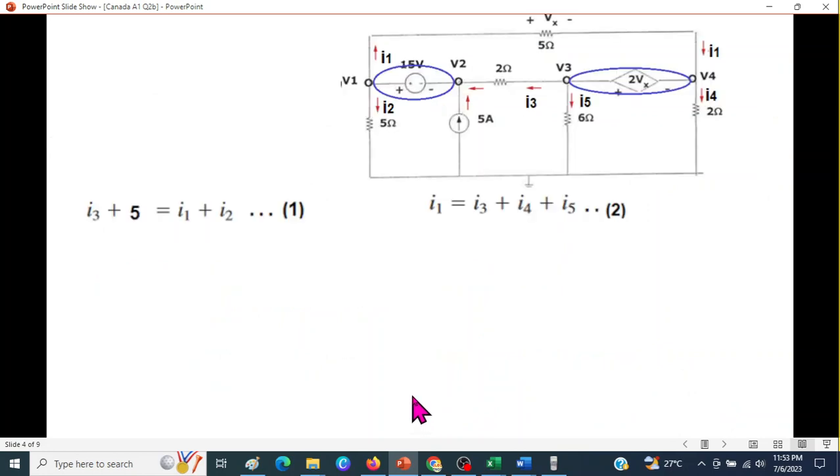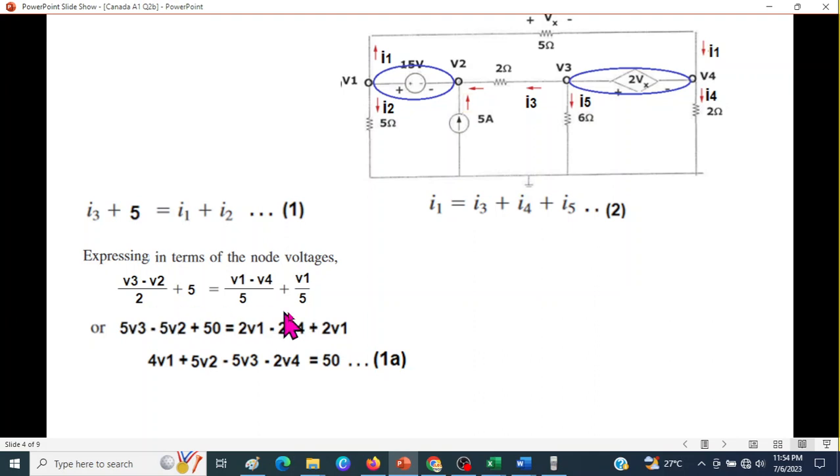Now, since we need to find the voltage, we have to convert the KCL equations into voltage form. And I hope you remember how to write, for example, I3. Now, this is I3, so we can say it as V3 minus V2, from higher to lower, V3 minus V2 divided by 2. So, V3 minus V2 divided by 2, plus this 5, and then plus I1. Now, I1, look, it is going from here to here. So, V1 is higher. So, V1 minus V4 divided by 5. V1 minus V4 divided by 5. And finally, I2. This is I2. I2 is coming from V1 to ground. So, V1 divided by 5.